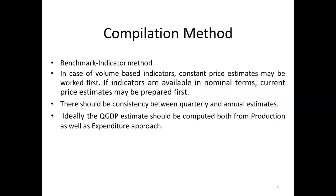Now coming to the Compilation Method. At the national level, for Quarterly and Advanced Estimates, we use the Benchmark Indicator Method. States may also use the Benchmark Indicator Method in compilation of Quarterly and Advanced Estimates at the state level. In the Benchmark Indicator Method, for each industry, a Key Indicator or a set of Key Indicators are used to extrapolate the GVA in the corresponding period of the previous year.